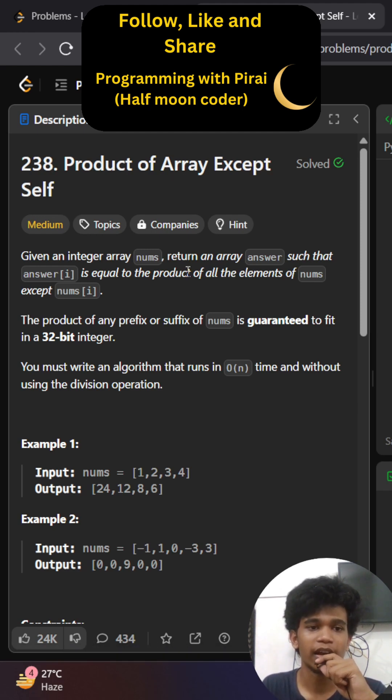Here they will be given an array and we want to return the answer such that that answer array's index is equal to the product of all elements of nums except nums of i.